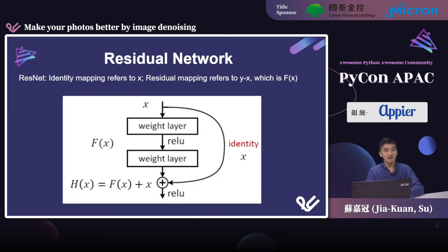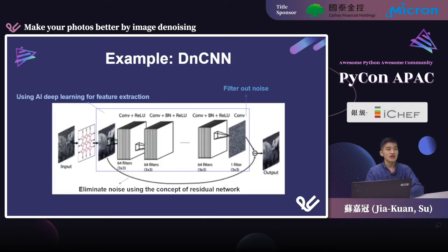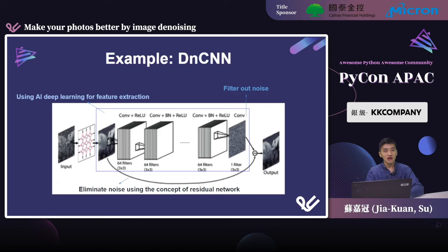The other main design is the residual network. The idea of residual network comes from a very famous deep learning model called ResNet. The design makes models very deep by using identity mapping and residual mapping. One classical example that uses residual network for image denoising is DnCNN. The model design of DnCNN is similar to other computer vision models — it uses convolution layers. The most obvious difference from UNet is its output: DnCNN outputs the noise, not the clean image. The output noise is then subtracted from the noisy image to get the final clean image.